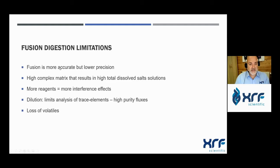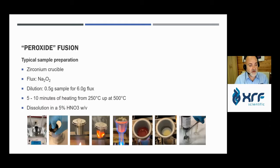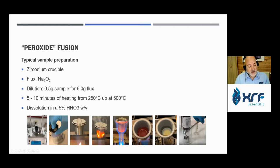For a typical peroxide fusion procedure using a zirconium crucible, the flux is sodium peroxide. We take 0.5 grams of sample and 6 grams of flux. Fusion is done at temperatures between 250°C and 500°C to obtain complete dissolution, taking about 5 to 10 minutes to completely digest the sample. After the sample is completely dissolved and cooled, we dissolve the residue in diluted acid.